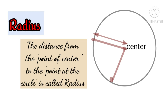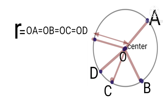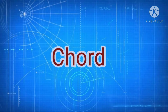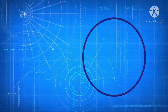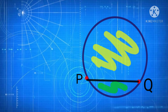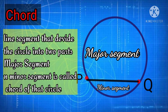The distance from the center to a point on the circle is called the radius. Since a circle is a collection of infinite points on its edge, at each and every point the distance from the center is the same — the circle has the same radius at every point. Next, if we take two points P and Q on the circle and join them, we get a line segment called a chord. This chord divides the circle into two parts: the major segment and the minor segment.